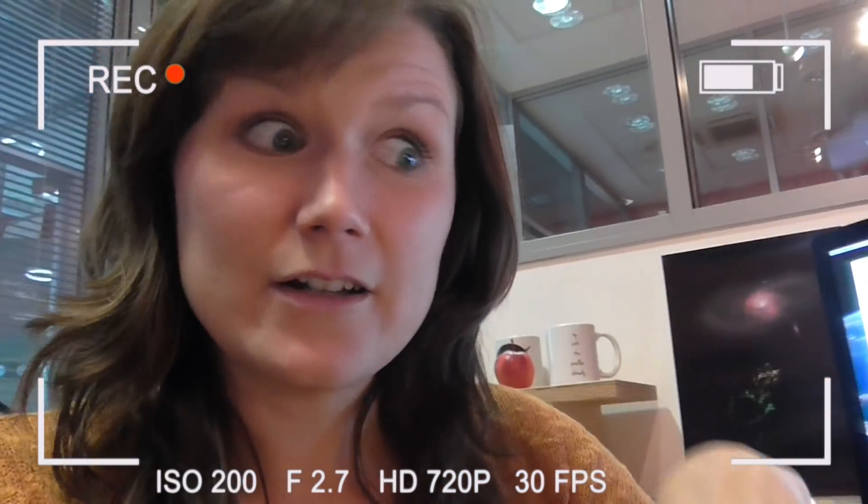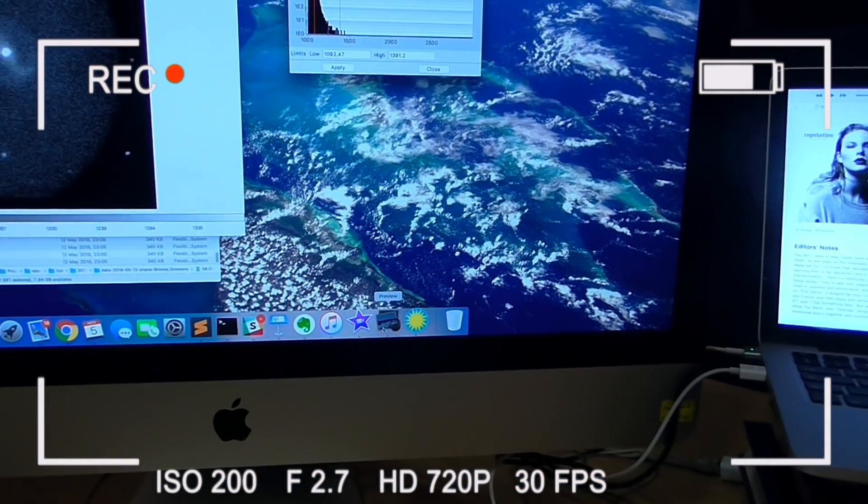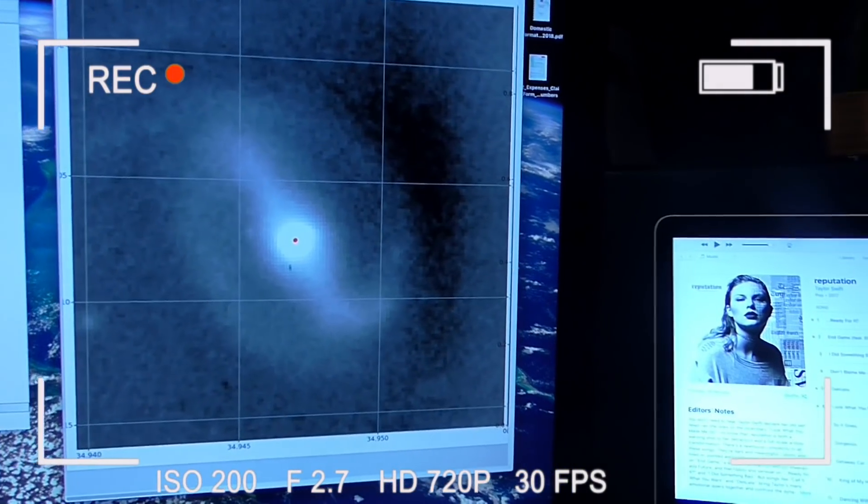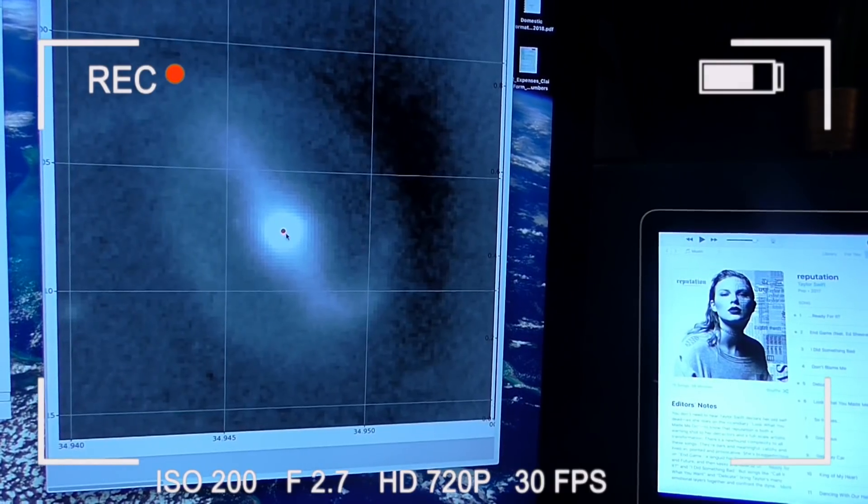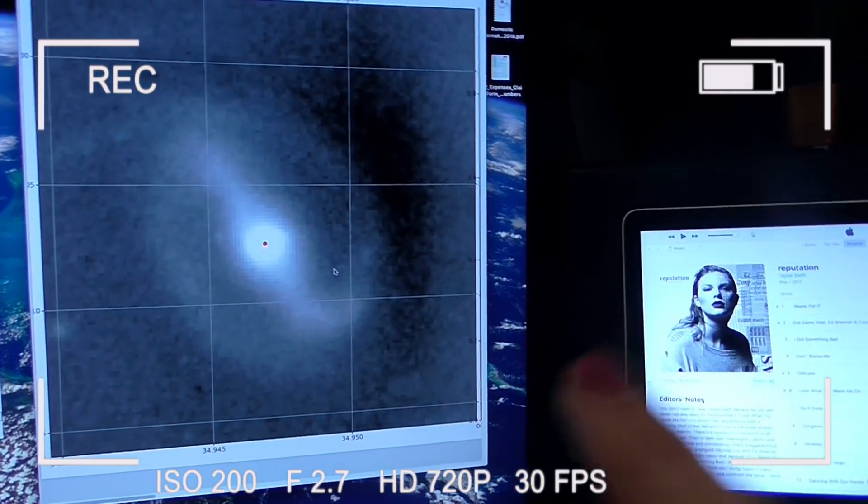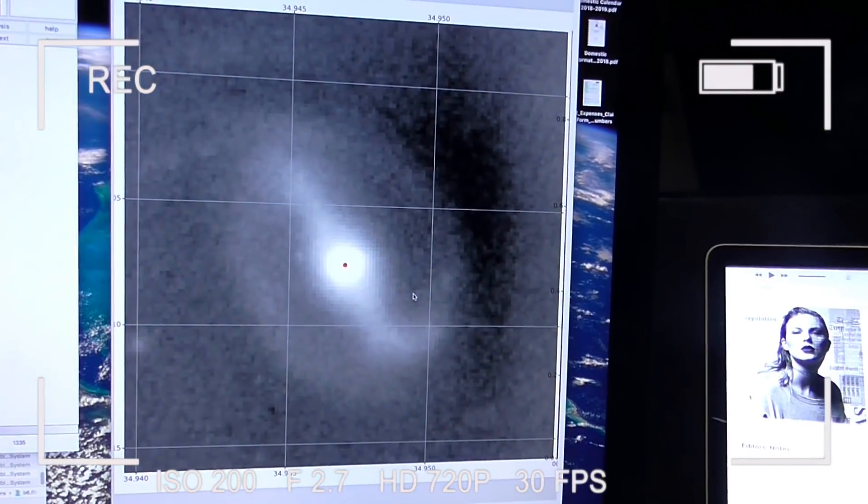So those are the things that I've already done to the image. So I'll show you what one of those looks like. This is what a reduced image of that same galaxy looks like. You can see it in so much more detail now. I've also labeled where the very central brightest point of the galaxy is in that central bit.